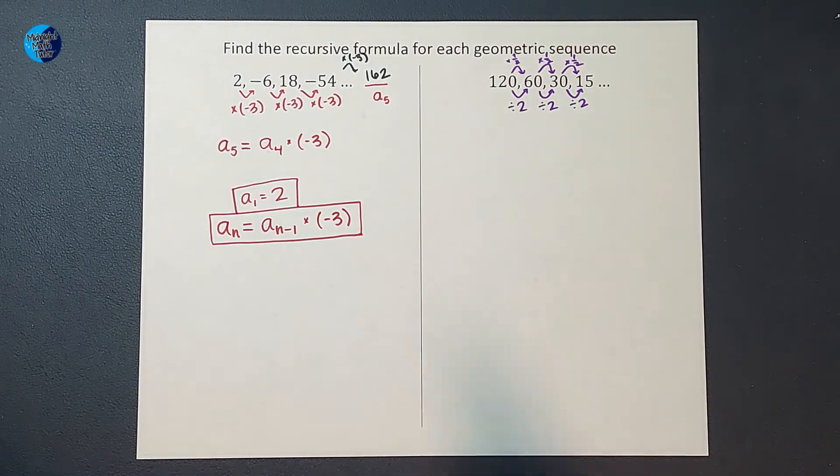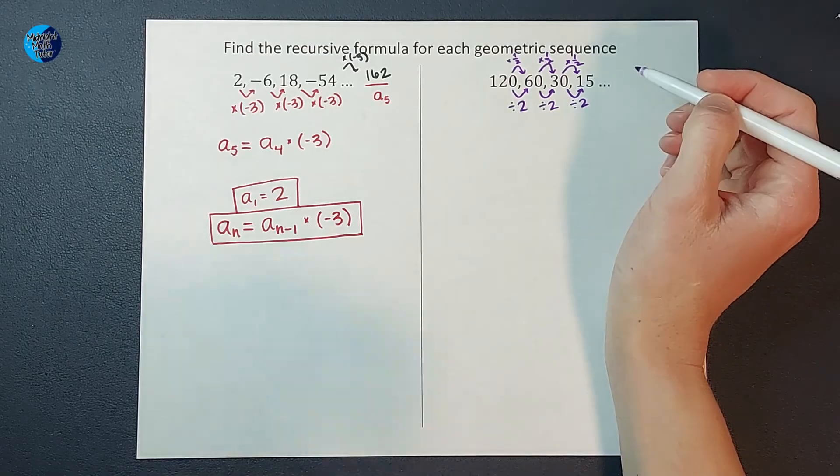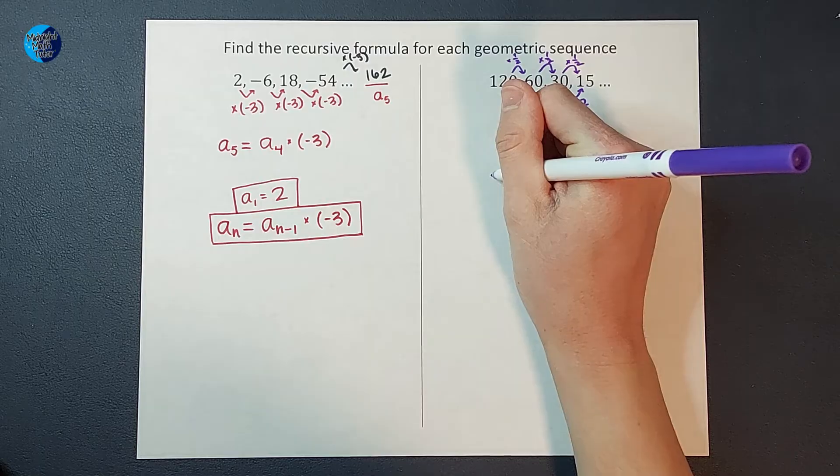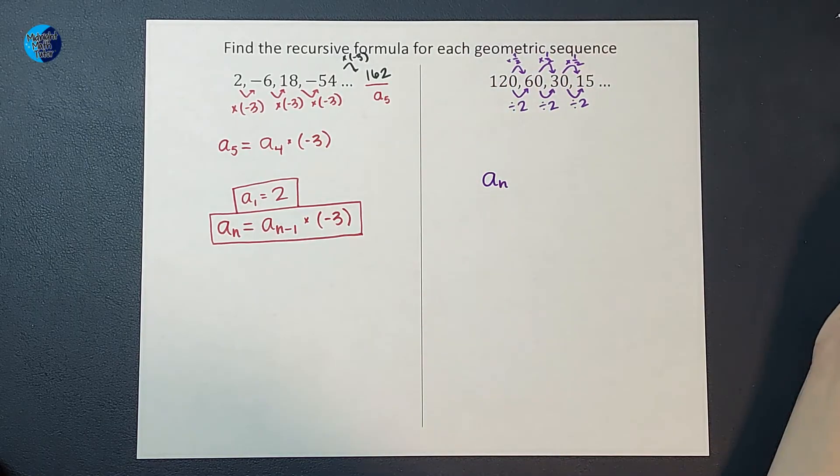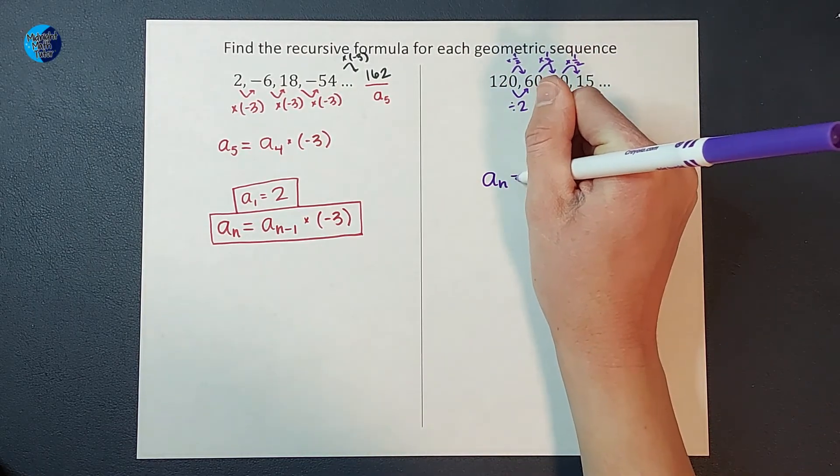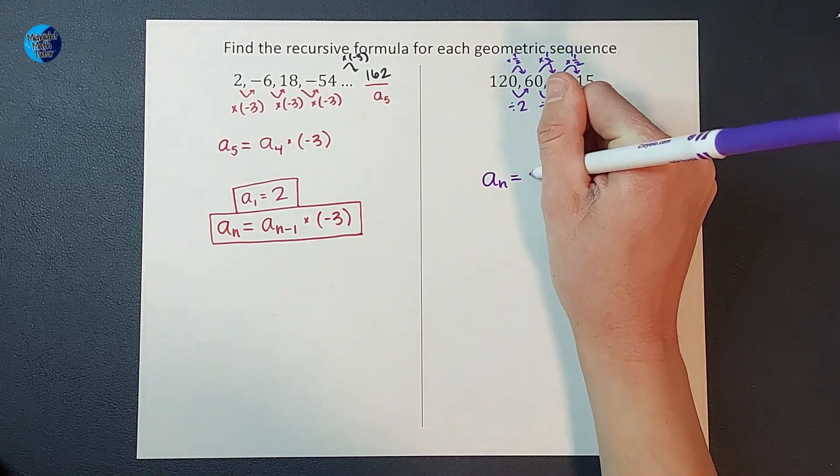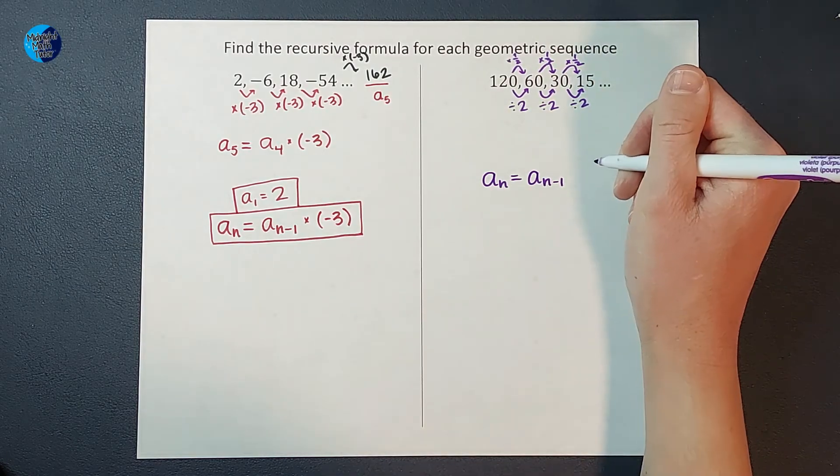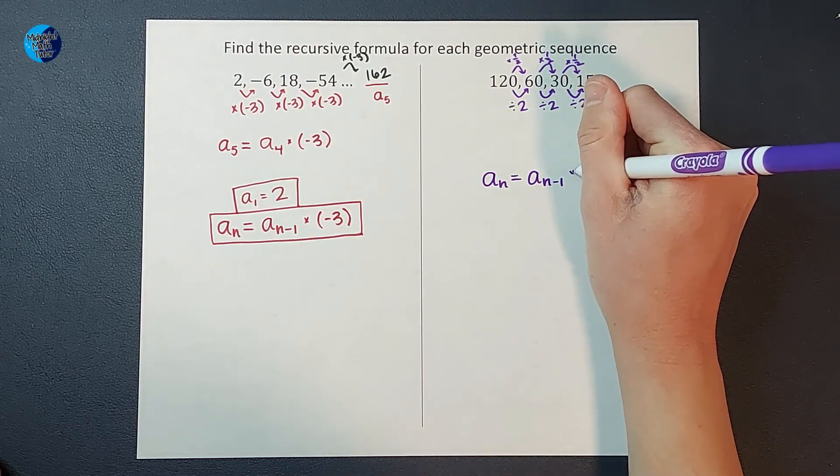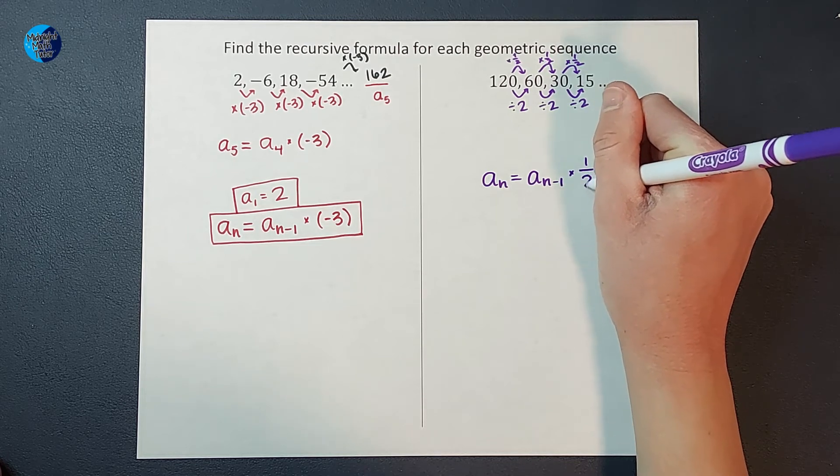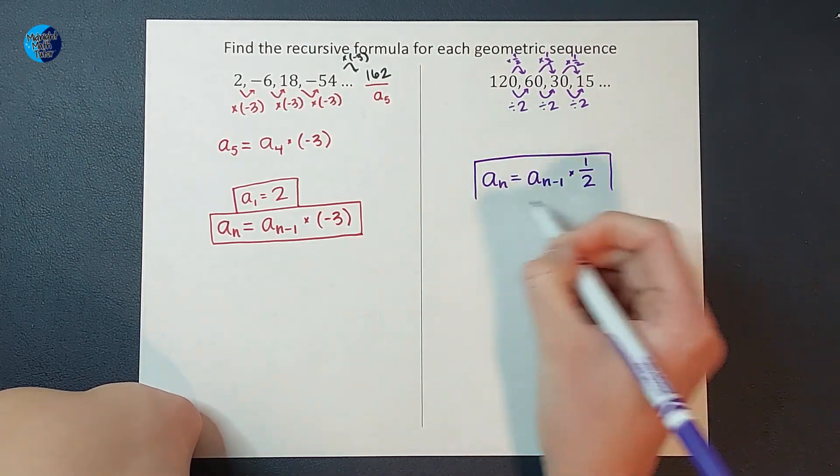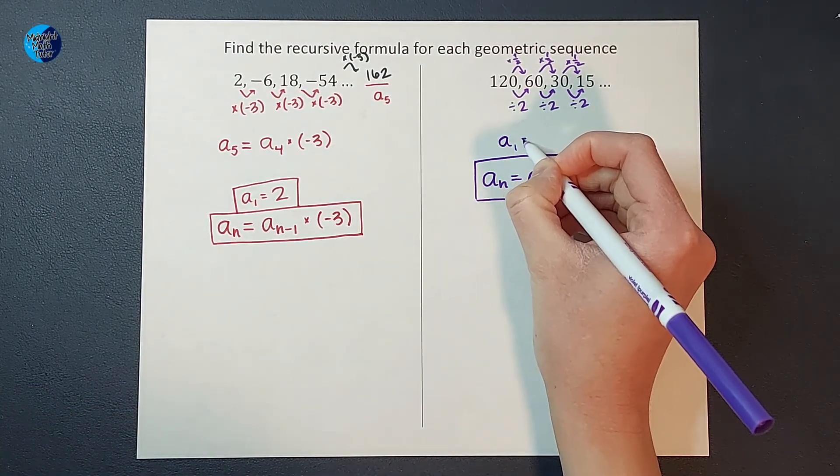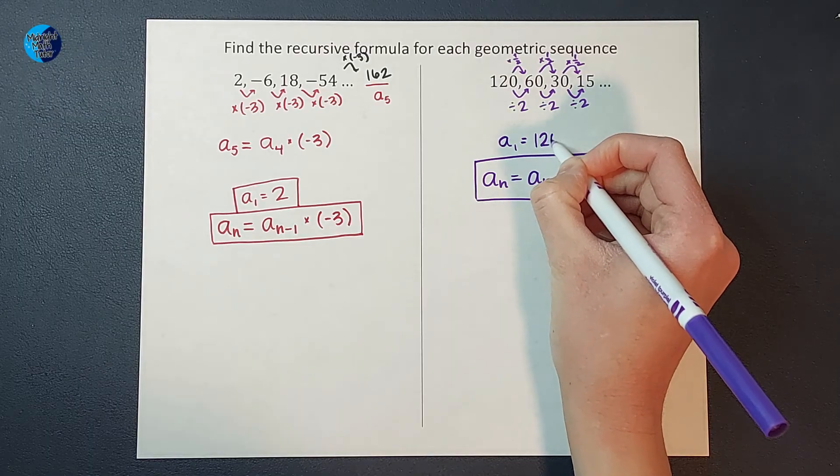So how would I say in math language, whatever number you want to find, take the one before it, multiply by one half? Well, I say whatever number you want to find, A sub n, is equal to the one before it. In math language we say A sub n minus 1. And what are you going to do? You are going to multiply by one half. Look, there we go. Now in order for this to be helpful, we need to tell people that the first term in this sequence is 120.